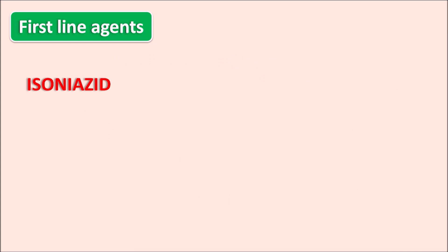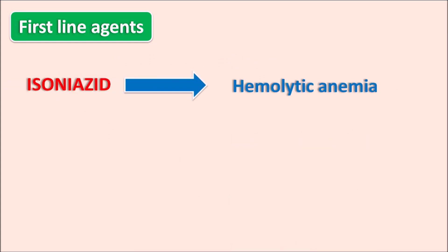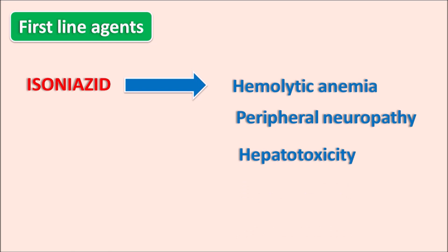Isoniazid produces three important side effects. First, it can produce hemolytic anemia, which is more pronounced in patients with glucose-6-phosphate dehydrogenase deficiency. Second, peripheral neuropathy is an important side effect; pyridoxine supplements can be given along with isoniazid to treat this. Third, hepatotoxicity is another important side effect. Isoniazid is only suitable for mycobacterial infections, making it a narrow spectrum drug.